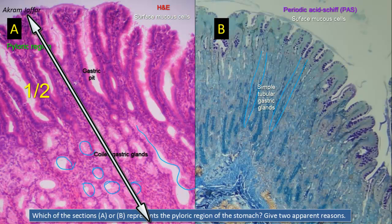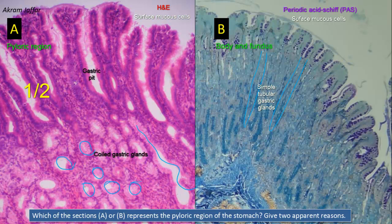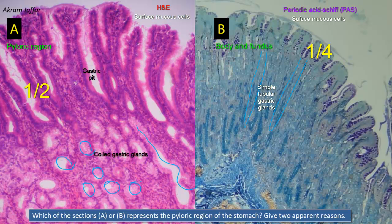The pits in the pyloric region are deeper than those present in B, which is the body and fundus of the stomach. The pyloric glands open into deep pits, and the presence of these deep pits gives the superficial mucosa a characteristic frond-like appearance in histological sections. The gastric pits in the fundus or body occupy about one quarter of the thickness of the gastric mucosa. Also note that in section A, the pyloric glands are lined almost exclusively by mucus-secreting cells, and there is a very small number of parietal cells, characterized by their fried egg appearance, in the pyloric region.